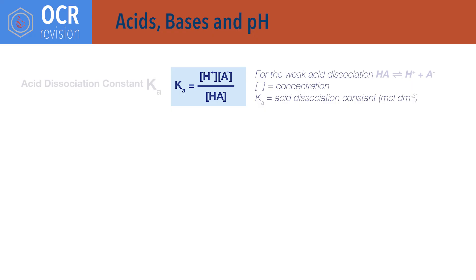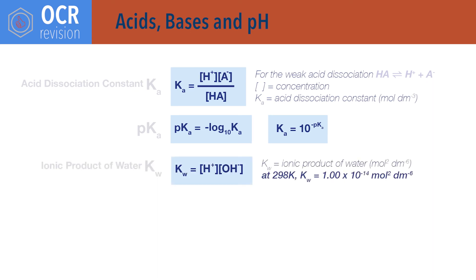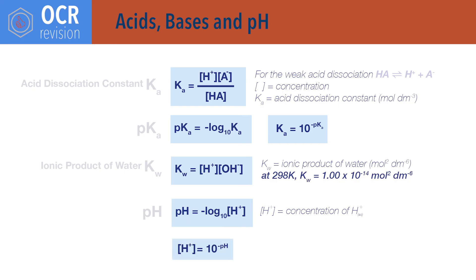For acids, bases and pH. Ka equals concentration of H+ times concentration of A−, divided by concentration of HA, where Ka is the acid dissociation constant, A− refers to conjugate base ions of the weak acid HA, and concentrations are given in moles per decimetre cubed. pKa equals minus log to the base 10 of Ka, and Ka equals 10 to the minus pKa. Kw equals concentration of H+ times concentration of OH−, where Kw is the ionic product of water and has a value of 1 times 10 to the minus 14 at 298 kelvin. pH equals minus log to the base 10 of the concentration of H+ ions, and concentration of H+ ions equals 10 to the power minus pH. Concentration of H+ ions is in moles per decimetre cubed.